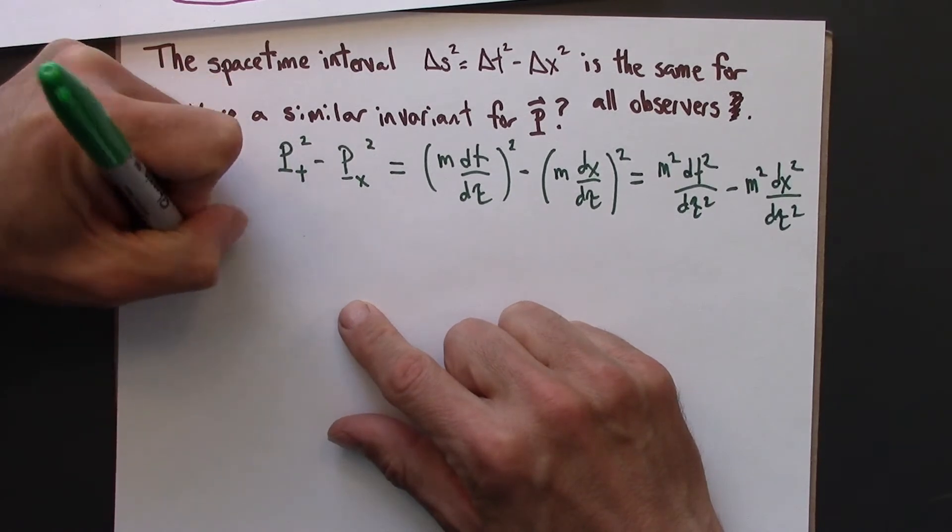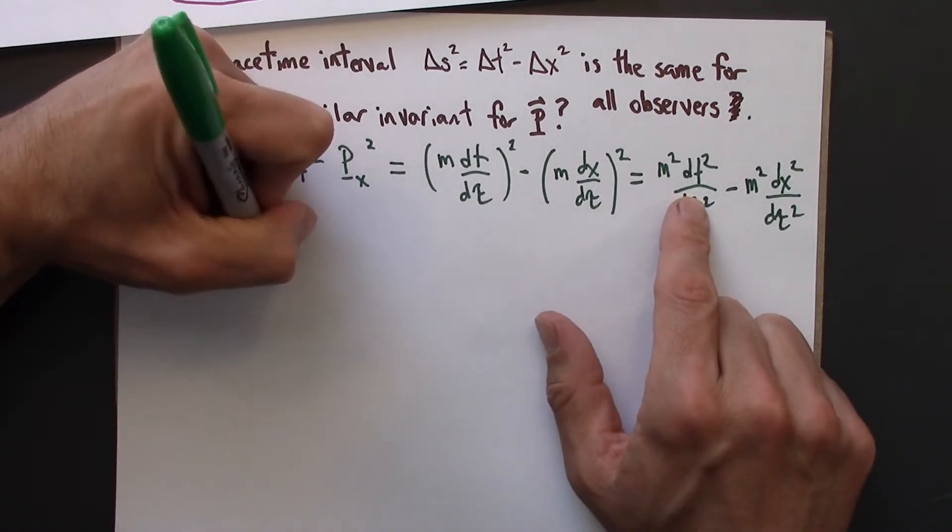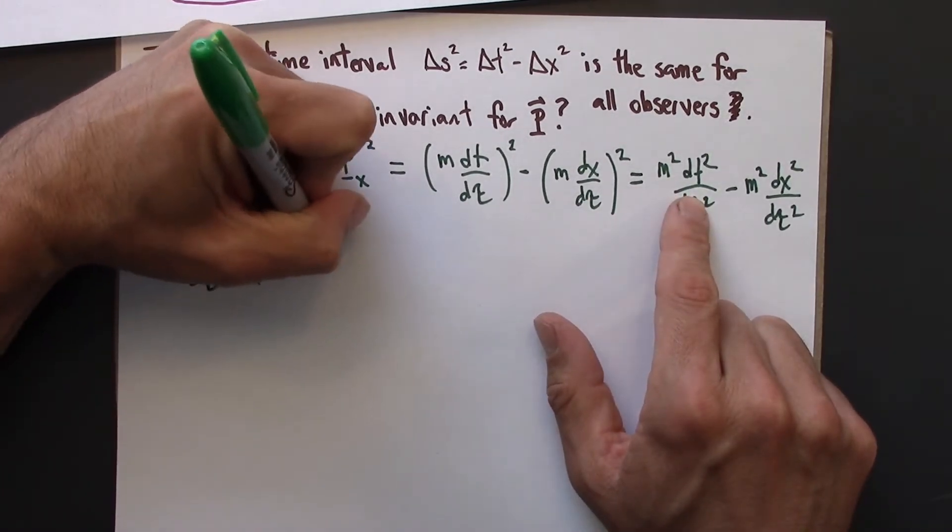So m squared d tau squared, and this is going to give me dt squared minus dx squared.